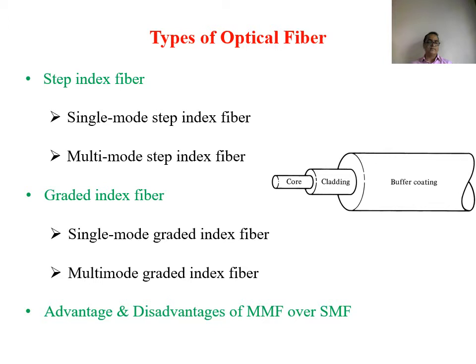Multi-mode fiber also has drawbacks. When large numbers of optical pulses are launched into the fiber, they are distributed among the various modes. Each mode propagates at a different velocity, so at the output the information distributed in different modes travels at different speeds and arrives at different times. This causes intermodal dispersion due to broadening of the pulse in multi-mode fiber. If a graded index profile is used, this problem can be eliminated.